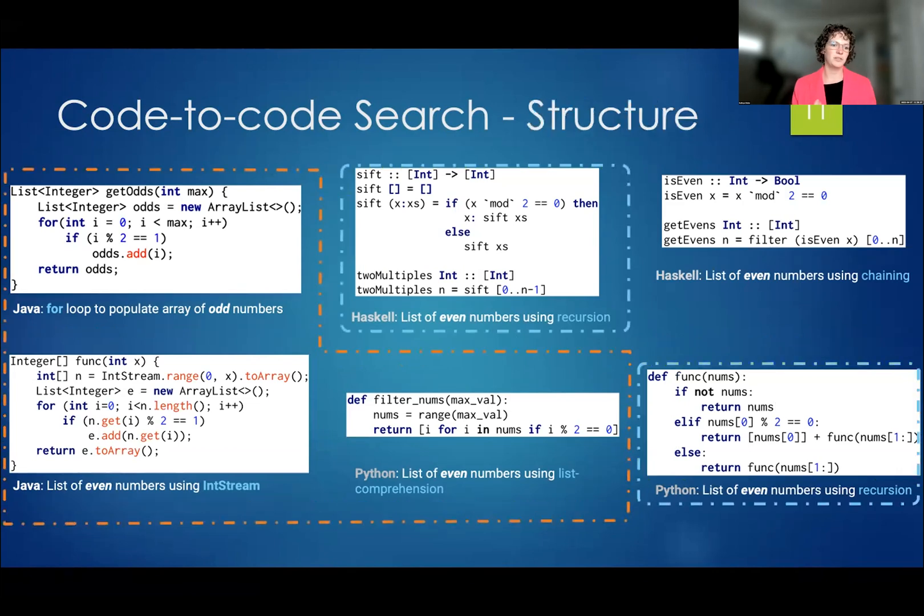And then we also have similarity across structure. So with all these levels of similarity, we are able to draw parallels between different areas of the source code and exploit these similarities to create effective search.